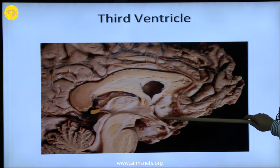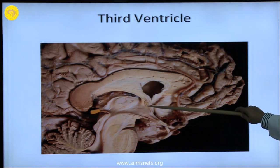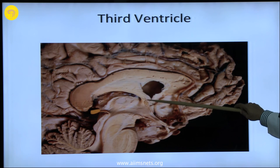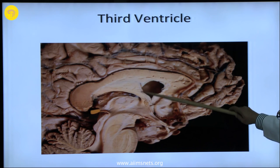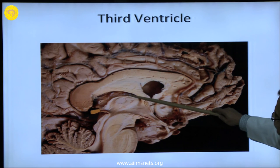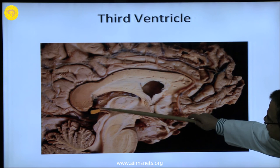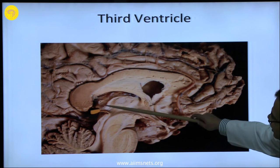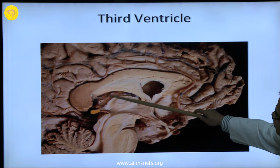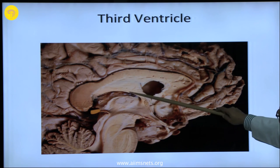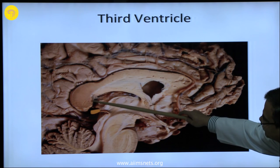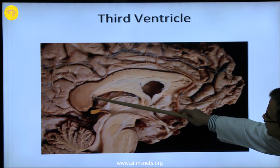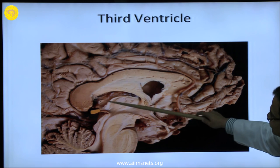The anterior boundary of the third ventricle is the lamina terminalis, then the anterior commissure, the anterior column of the fornix, and the roof is formed by the choroid plexus. Above the choroid plexus is the fornix — the body of the fornix — and most posteriorly is the corpus callosum.